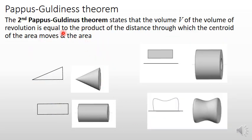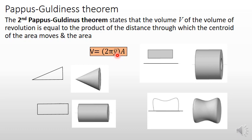In the second Pappus-Guldinus theorem, it states that the volume of revolution is equal to the product of the distance through which the centroid of the area moves and the area. That is, V equals 2π·ȳ·A, where 2π·ȳ is the distance traveled by the centroid of the area for one complete revolution, and A is the area which is revolved. For example, this solid cone can be obtained by revolving this triangular area about its base for 360 degrees.